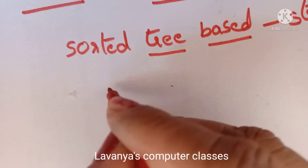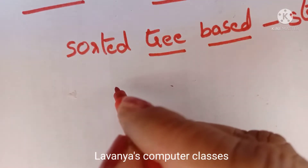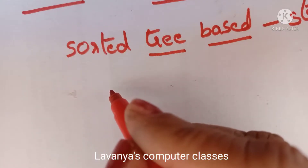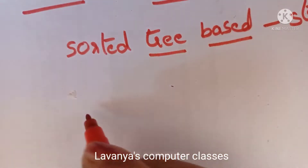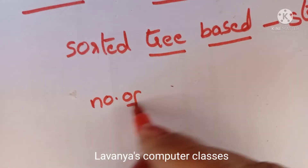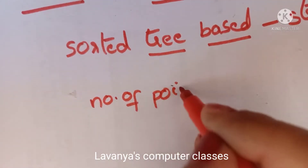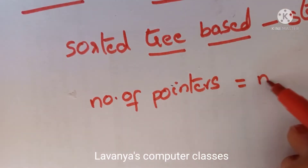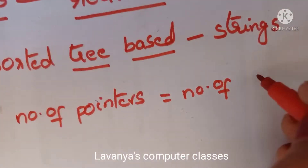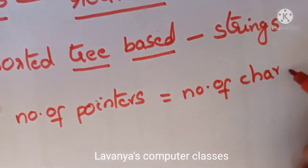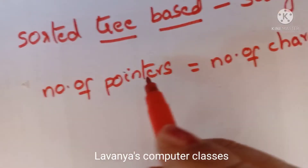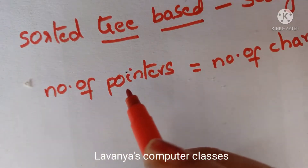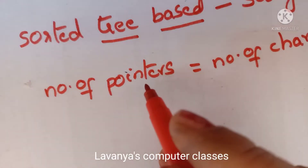Like a regular tree, a trie also contains a root. But in a trie, it has a number of pointers equal to the number of characters of the alphabet. The number of pointers equals the number of characters in the string. There are many characters, so there are many pointers.